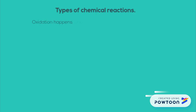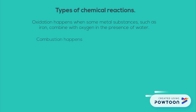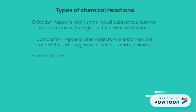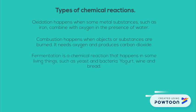Types of chemical reactions. Oxidation happens when some metal substances, such as iron, combine with oxygen in the presence of water. Combustion happens when objects or substances are burned — it needs oxygen and produces carbon dioxide. Fermentation is a chemical reaction that happens in some living things, such as yeast and bacteria; yogurt, wine, and bread are some examples.